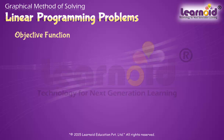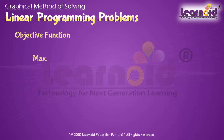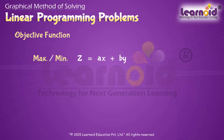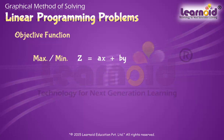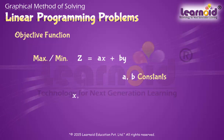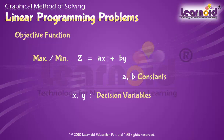Objective Function: A linear function of the type Z equals AX plus BY, which has to be minimized or maximized, is called a linear objective function. Variables X and Y are called decision variables.